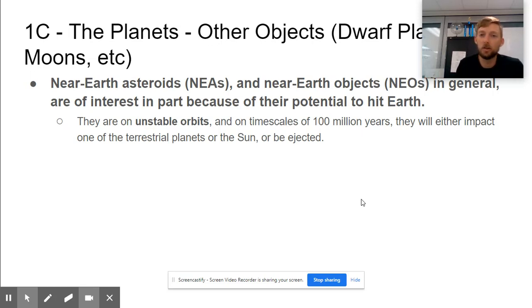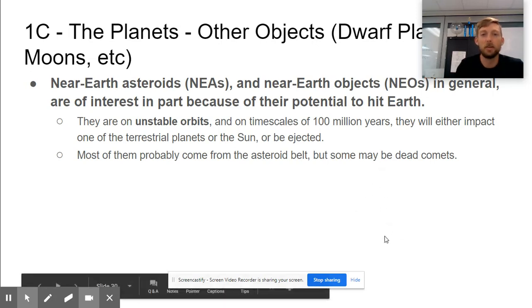Unstable orbits—on a timescale of 100 million years—will either impact one of the terrestrial planets or the sun, or be shot out into space. Their orbit isn't going to last forever. Granted, 100 million years is a very long time, I would say that's still pretty stable, but time is relative.